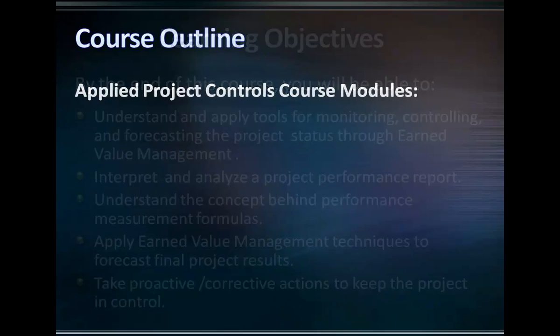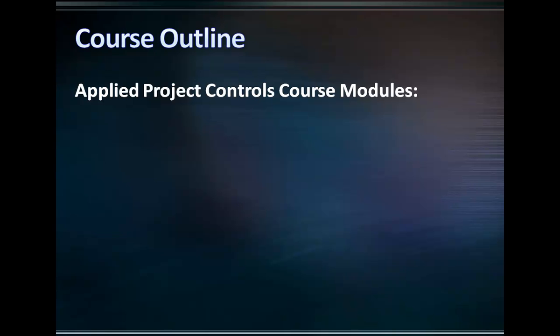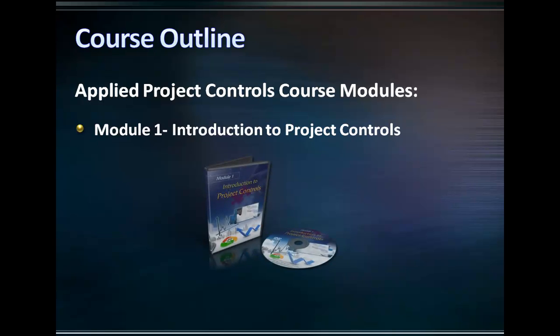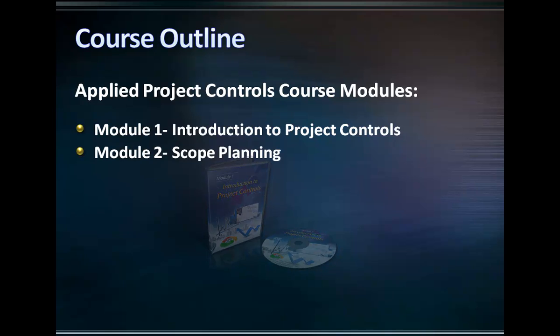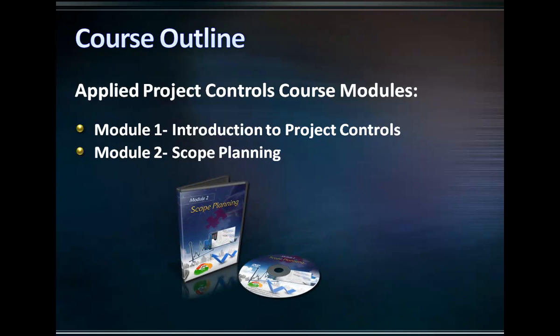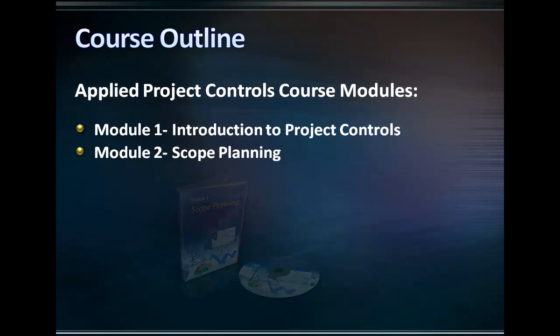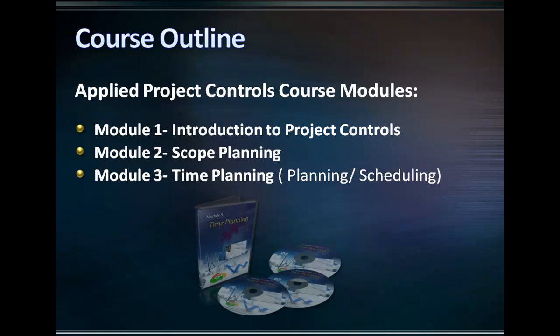The Applied Project Controls training series has been structured into seven modules. Module 1 is an introductory module that lays the blueprint for succeeding modules. Module 2 is all about scope planning and the importance of understanding and properly defining the scope of work. Module 3 covers the concept of time planning or planning and scheduling.